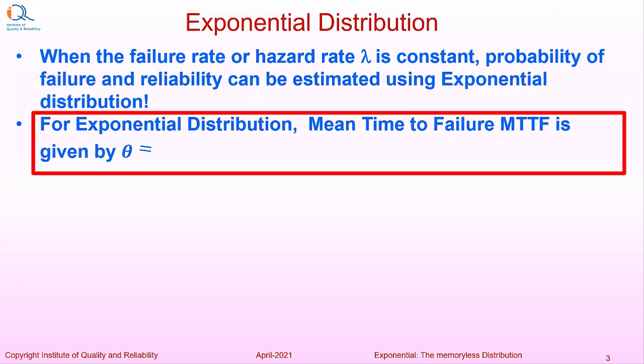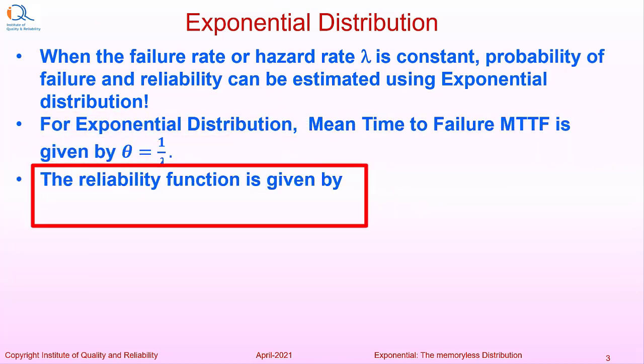For exponential distribution, mean time to failure theta is equal to reciprocal of lambda or 1 upon lambda. The reliability function is given by e to the power minus lambda t and this denotes reliability at time t. It can also be written as e to the power minus t upon theta as theta is reciprocal of lambda.